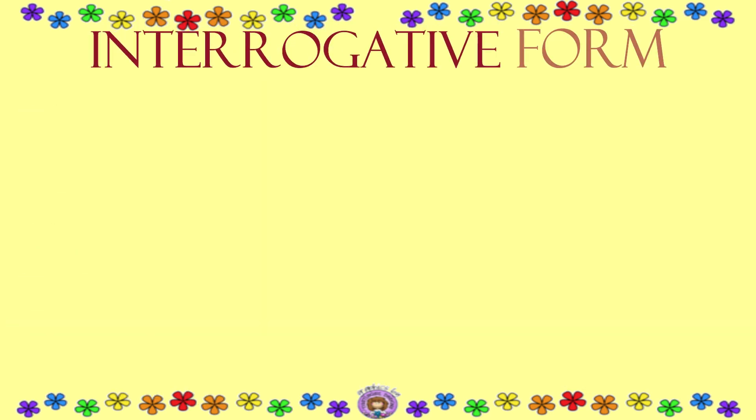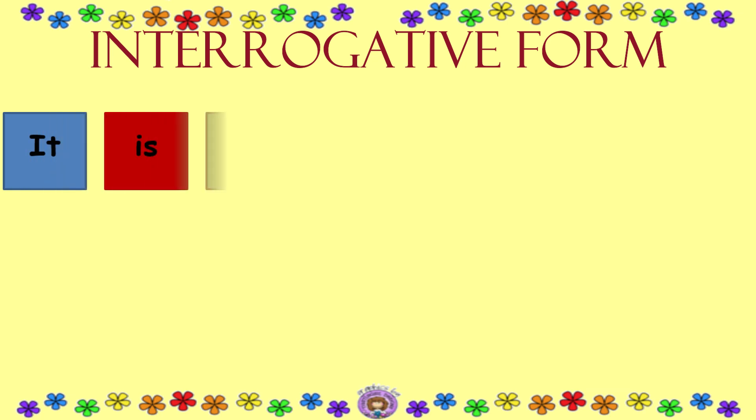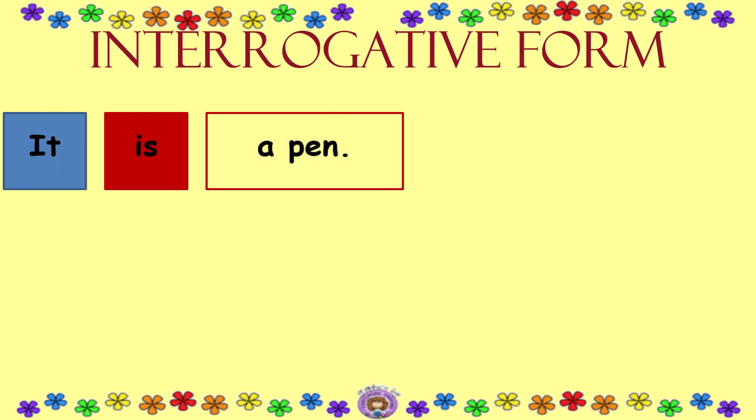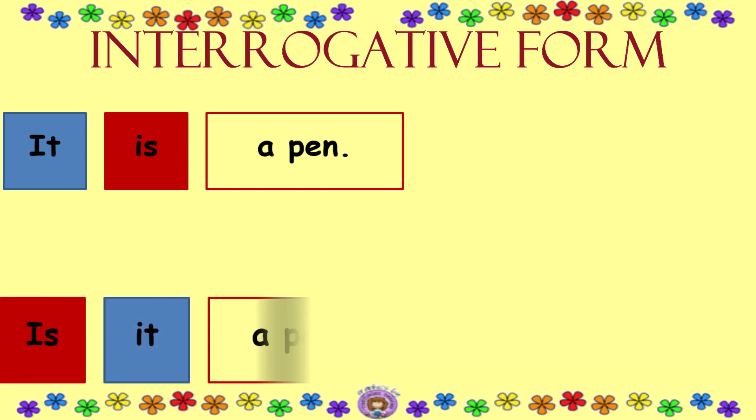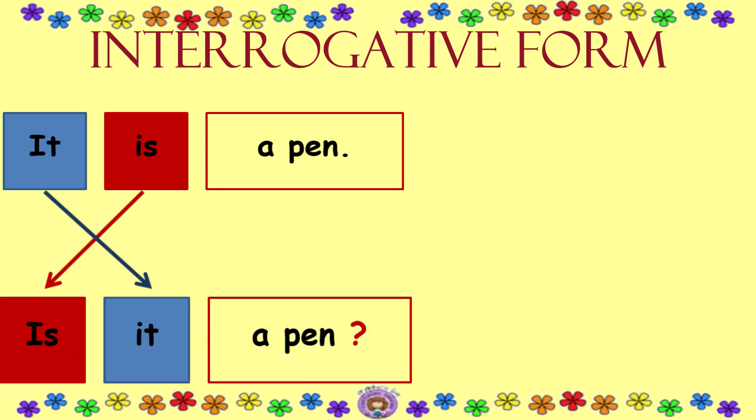Interrogative form. We reverse the subject and the verb to be. For example: it is a pen — we ask the question: is it a pen?